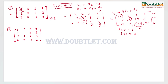Now we will find the rank of a four-cross-four matrix. The same procedure applies: first find the row echelon form, then count the non-zero rows. We identify the pivot element in row one, and we need to make the elements 3, 2, and 4 below it equal to zero.